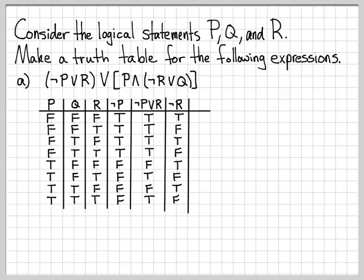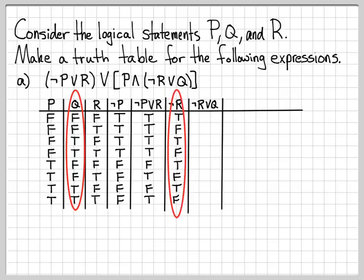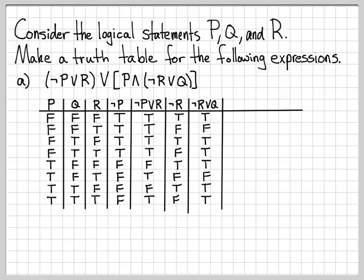Now let's make a column for not R or Q. I need to look at the not R column and the Q column. Wherever I have a true, I write down true. The only places I'm going to have falses are when both of them are false. There is one row where they're both false, and one other row where they're both false. Everything else is going to be true.